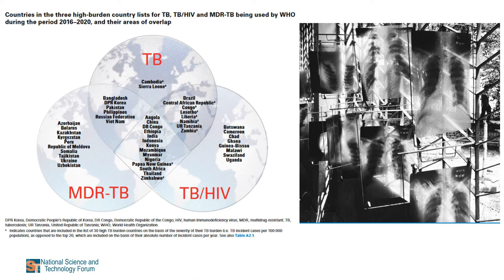This may lead to poorer treatment outcomes and the development of further resistance to other anti-TB drugs. Resistance to additional drugs has also been detected in some M. bovis isolates, including rifampicin and isoniazid. Resistance to these two essential first-line medications is defined as multi-drug resistant TB, which poses a major threat to human health globally. As with other zoonotic diseases, zoonotic TB cannot be controlled by the human health sector alone — animal health and food safety sectors must be engaged.